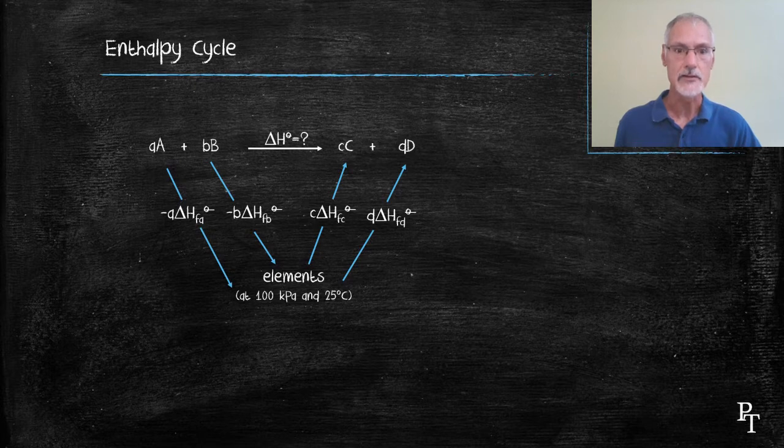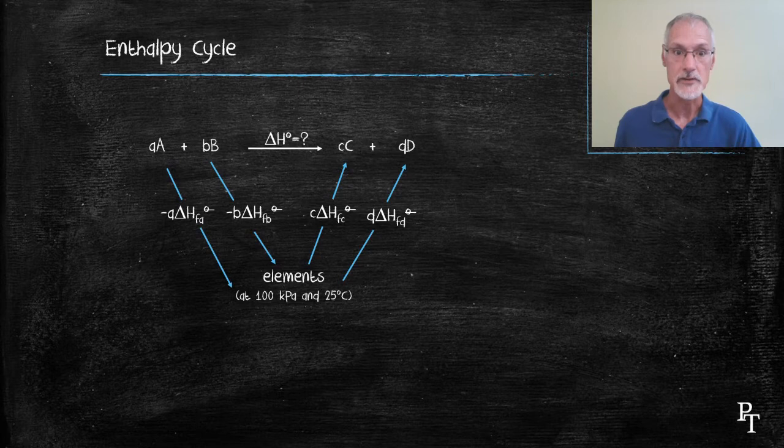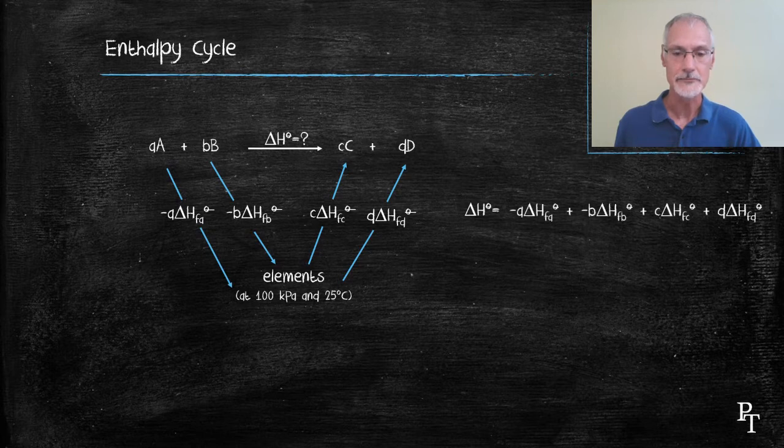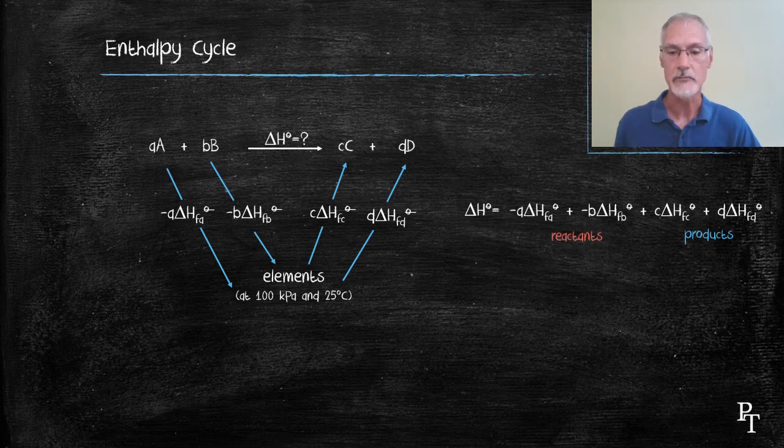The blue route is identical to the white route, and therefore I can apply Hess's law, which says that the enthalpy for the reaction that I want must be the sum of all of those steps. The first two terms represent reactants. The second two represent my products.